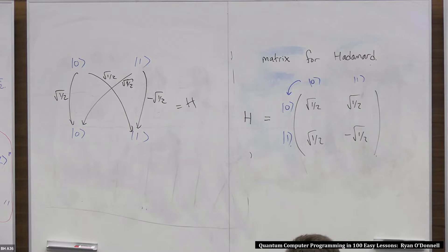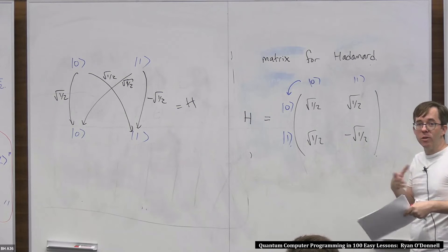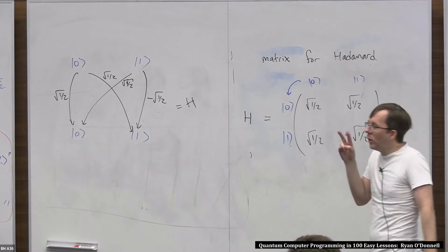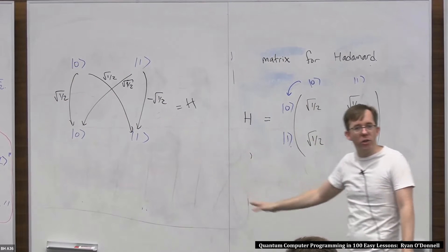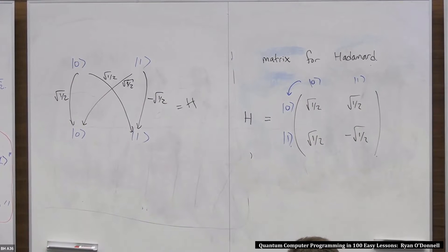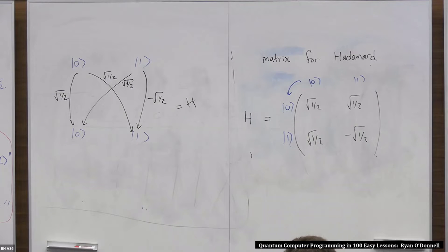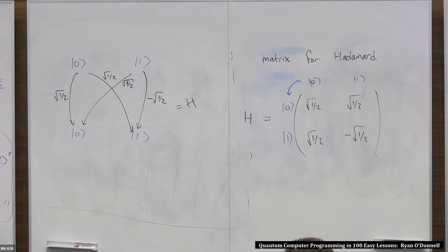In some sense, this is the main superposition-creating instruction — it's the only one you need. If I only gave you Hadamard and no other superposition-creating instructions, you'd be fine: you can still do all of quantum computing just with Hadamard. I'm going to give you two or three more instructions just so we have more examples to play with, but really this is the main one.